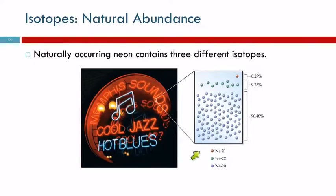90.48% of all neon atoms are neon 20. 9.25% are neon 22, and only 0.27% are neon 21. Those percentages can vary a little bit, but generally speaking, anywhere on the planet that you collect a sample of neon, the distribution is going to be very, very similar. That's called the percent natural abundance.